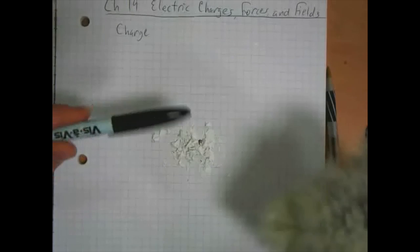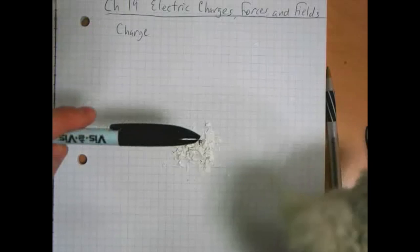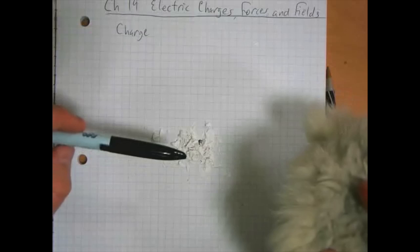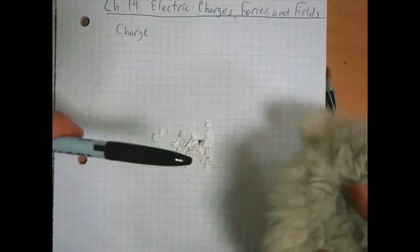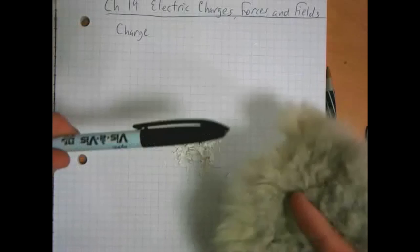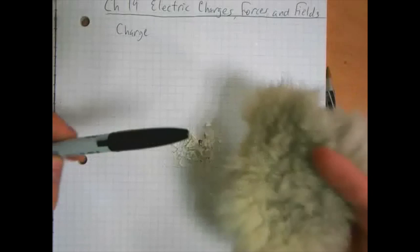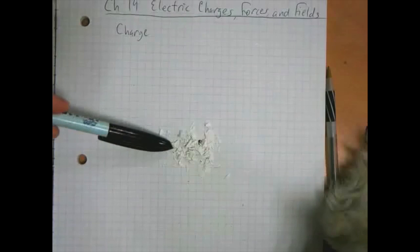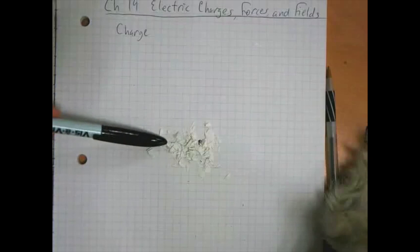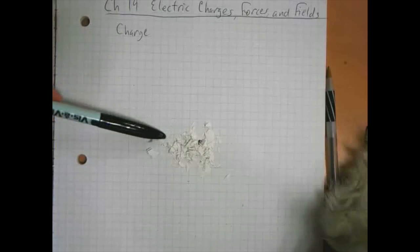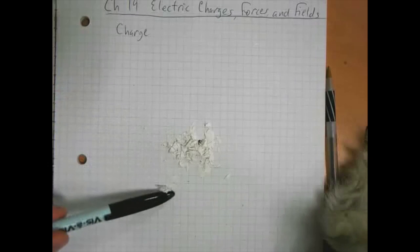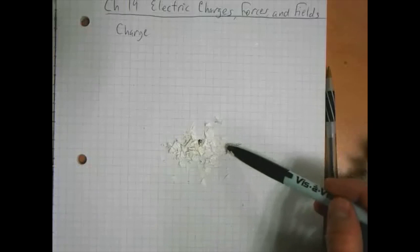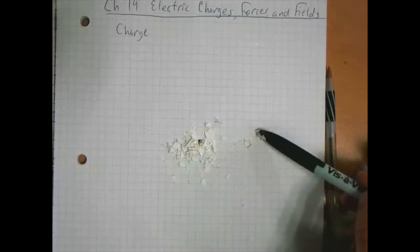But we can transfer charge from one object to another. Some materials hold on to the charge more strongly than others. There's a table on page 655 of your book, and in that table the items that are further down will hold on to their charges more strongly. If you rub rabbit fur on this marker, some charge will transfer onto the marker. Now if I put it near this paper, you can see that the little bits of paper are kind of dragged along by the marker. They are attracted to it.